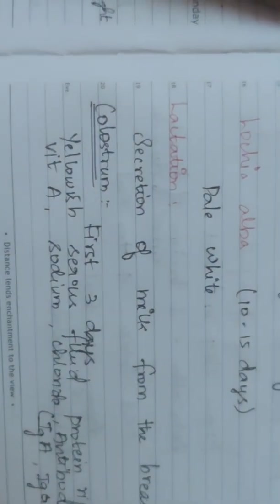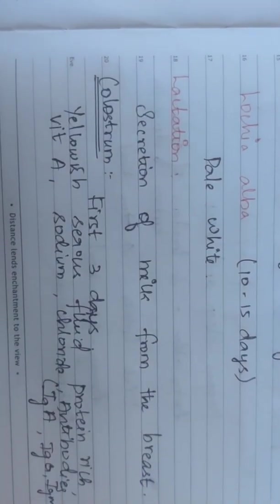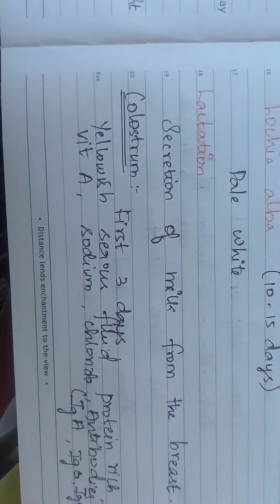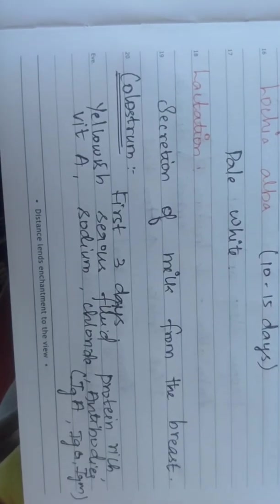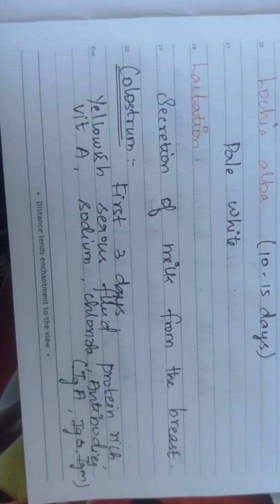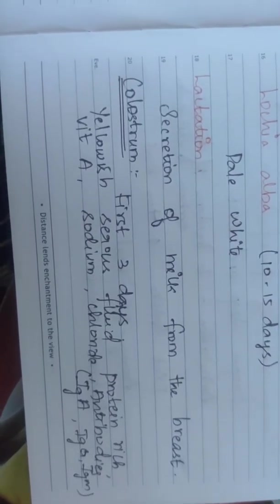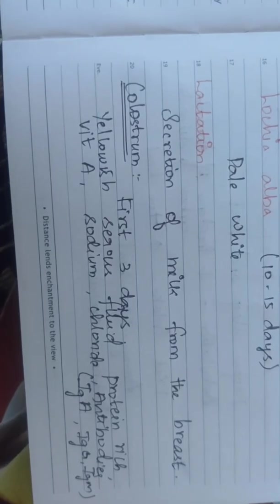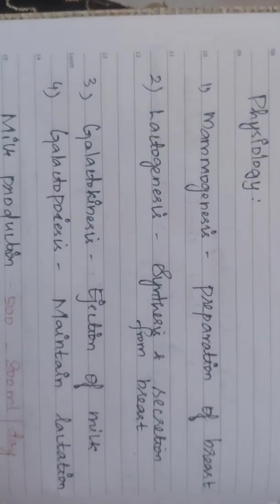The most important process is lactation. Lactation is the secretion of milk from the breast. Colostrum is the first milk produced during puerperium in the first three days. Colostrum is yellowish serous fluid, protein-rich, vitamin A, sodium chloride, and contains antibodies IgA and IgM. Colostrum is very important.